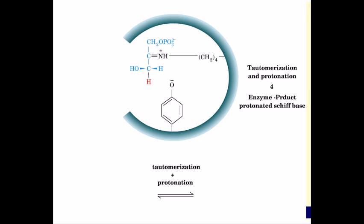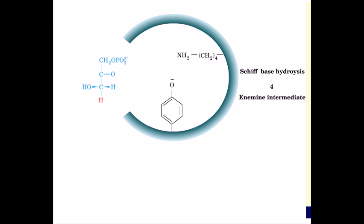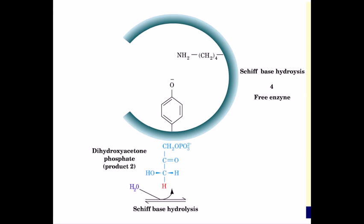In step 4, the enamine intermediate is protonated by tyrosine and undergoes tautomerization to form a new protonated Schiff base complex. In step 5, the protonated Schiff base is hydrolyzed, releasing product 2, dihydroxyacetone phosphate. The enzyme is now free to begin a new cycle of catalysis.